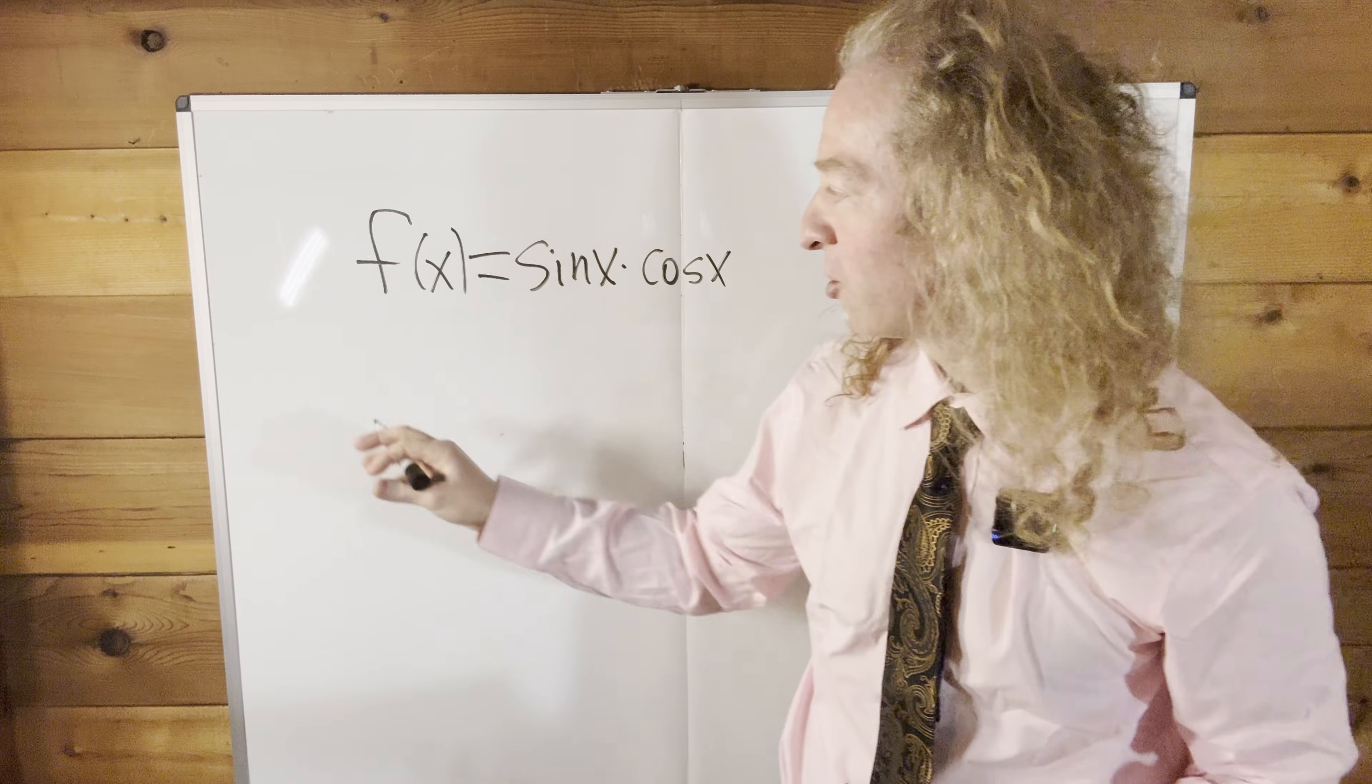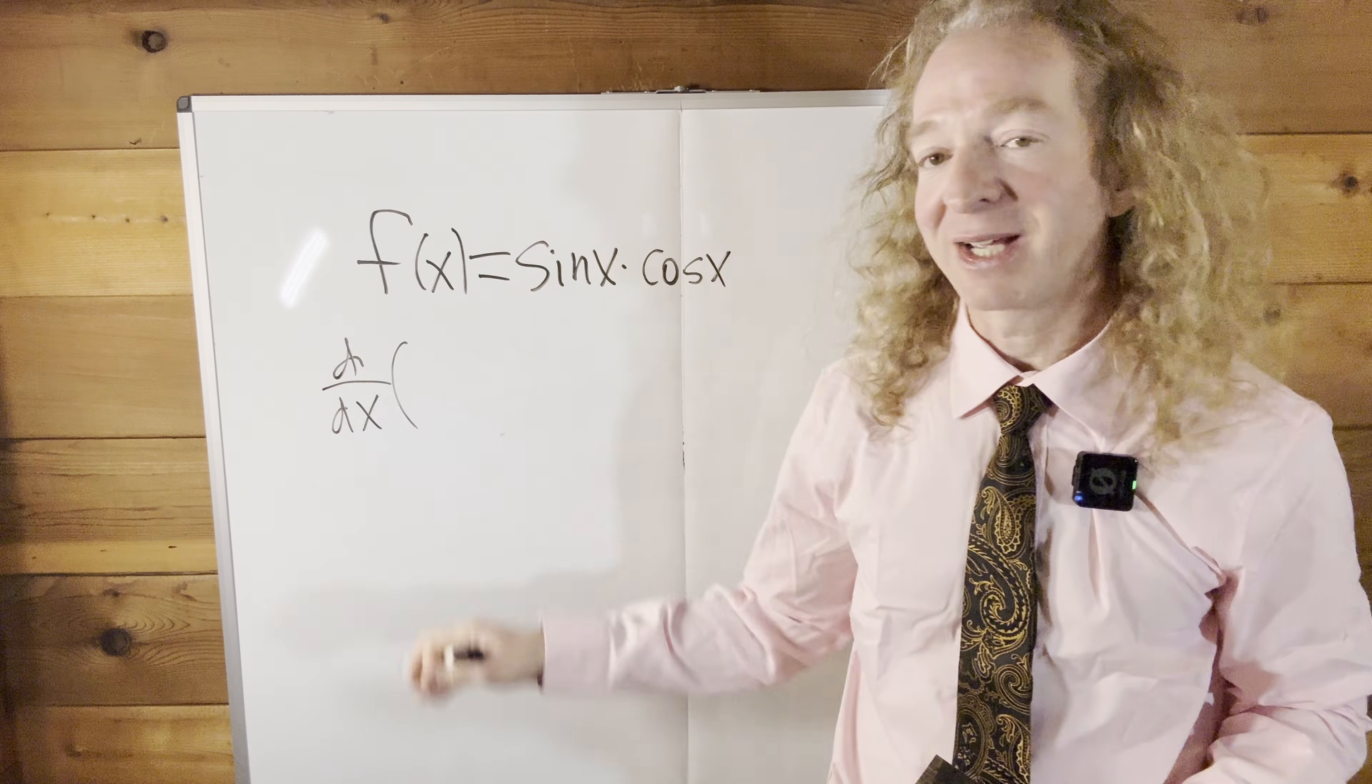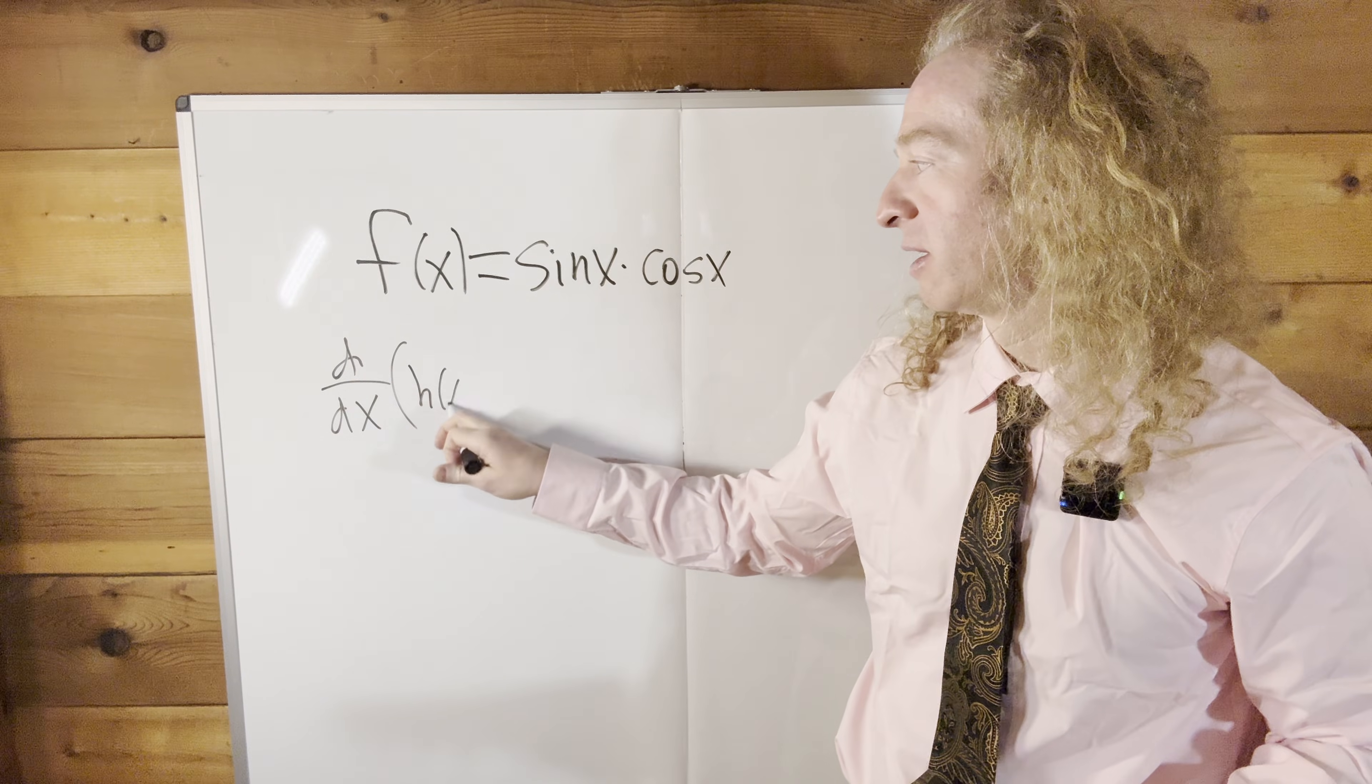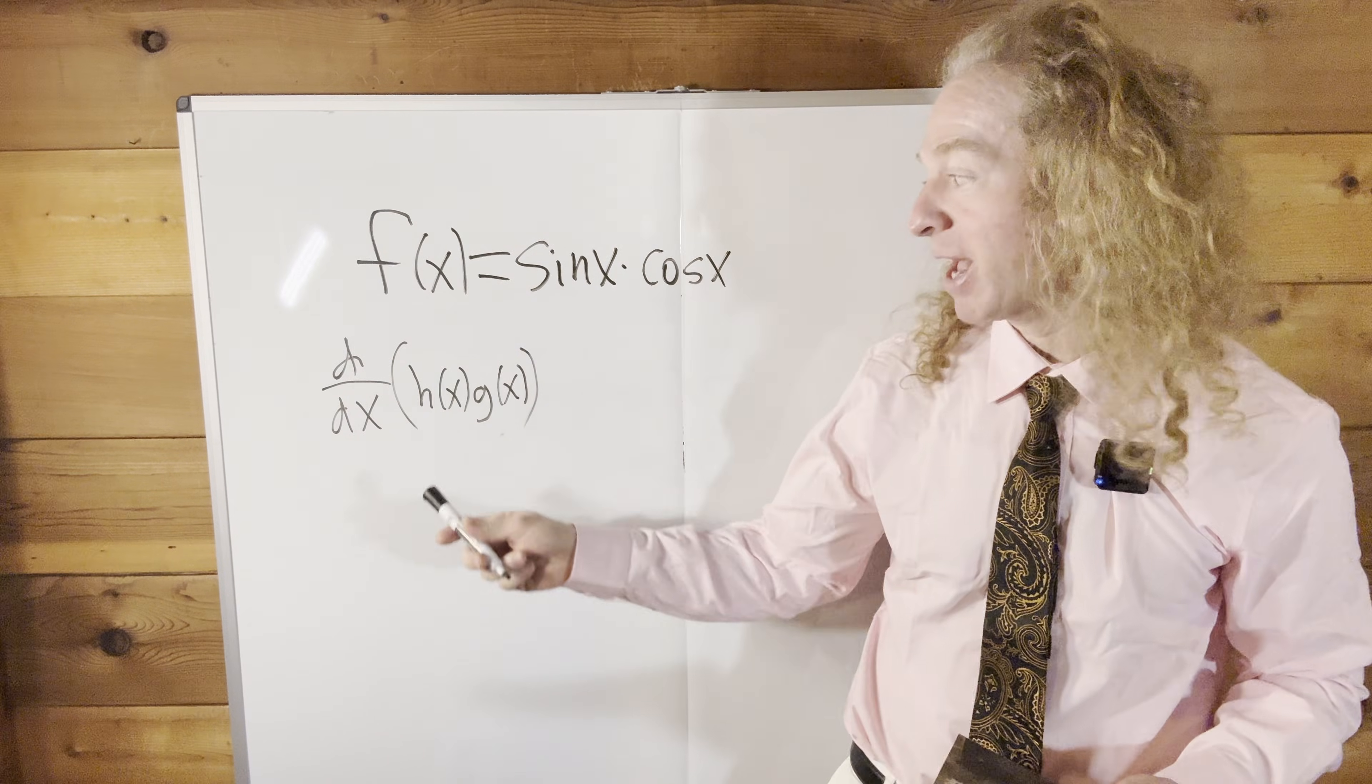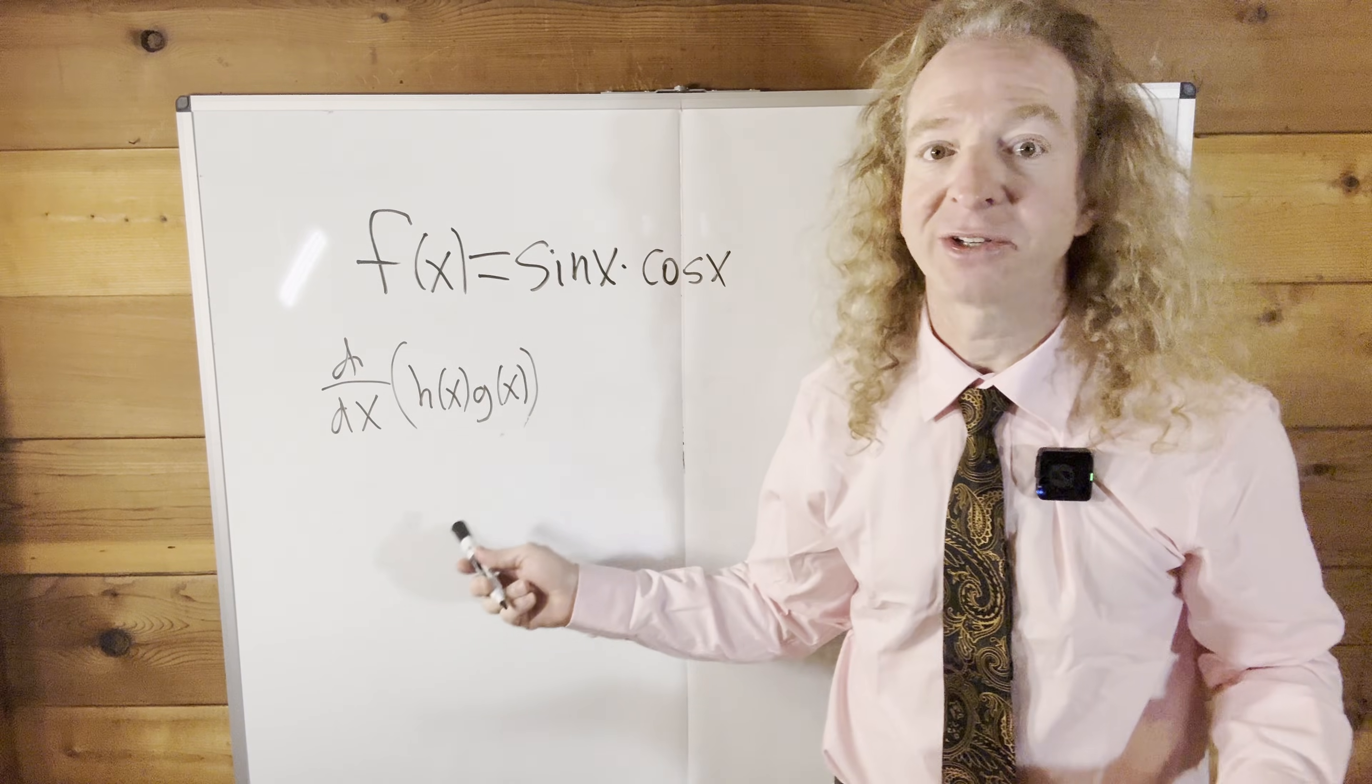So there is a rule called the product rule, and it says if you have the derivative with respect to x of a product, say h of x times g of x, what you can do is think of h as your first function and g as your second function, or your first factor or your second factor.